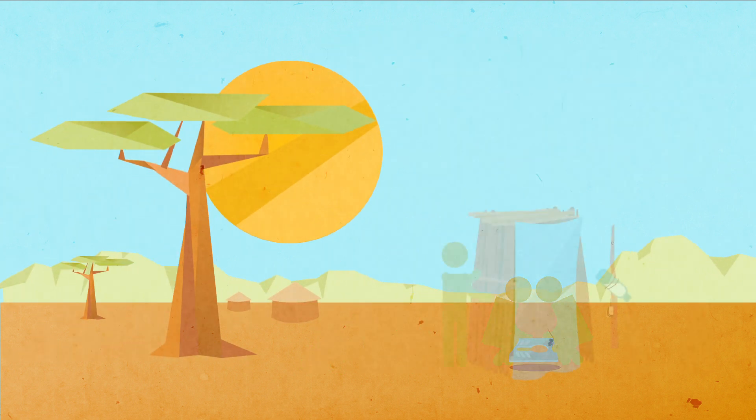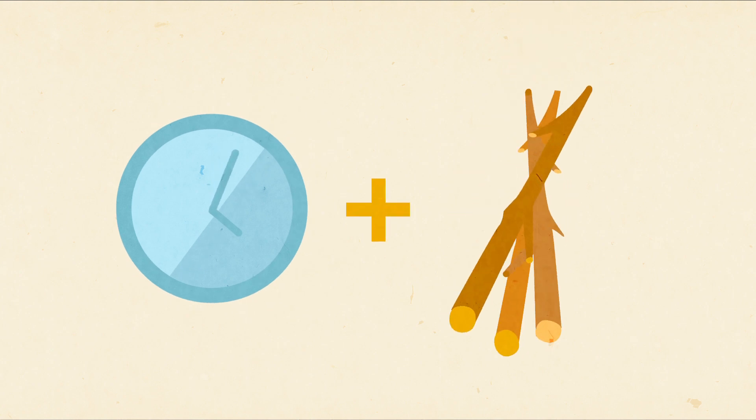The walls and door of the Arborloo are simple to make. Cost, just a little time and creativity with locally available materials.